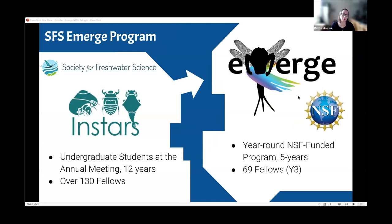I'll start by telling you about the eMERGE program. The eMERGE program grew out of the Society for Freshwater Sciences STARS program, which aimed to increase diversity within our scientific society through programming for undergraduates at our annual meeting. This program aimed to build a space for undergraduate students, facilitate a space for attendees from historically underrepresented backgrounds, lower barriers to participating in the freshwater sciences, and make space for people to continue developing a career in this space.